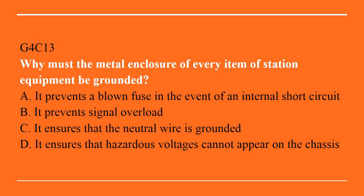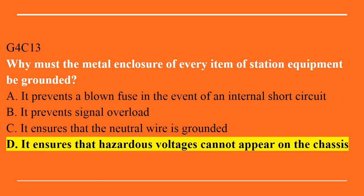G4C13: Why must the metal enclosure of every item of station equipment be grounded? A. It prevents a blown fuse in the event of an internal short circuit. B. It prevents signal overload. C. It ensures that the neutral wire is grounded. Or D. It ensures that hazardous voltages cannot appear on the chassis. Correct answer: D. It ensures that hazardous voltages cannot appear on the chassis.